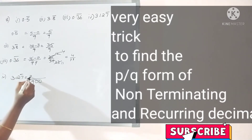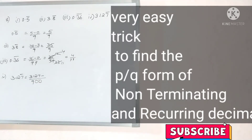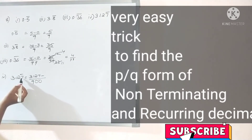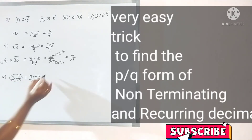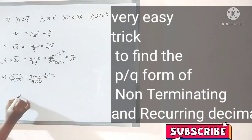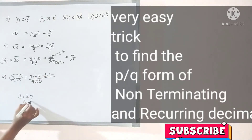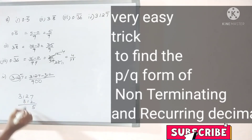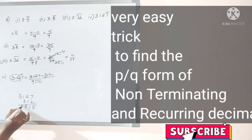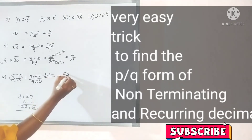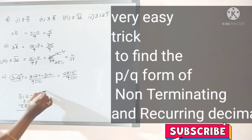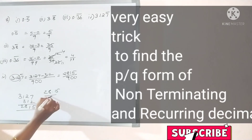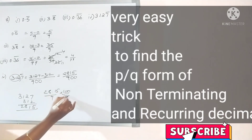Now write the complete number without the decimal point, then subtract the digits to the left of the repeating number — that is 312. So we get 3127 minus 312, which equals 2815. So this is 2815 by 900. In the process, we actually get 28.15 by 9, and then multiply by 100 over 100 to clear the decimal.